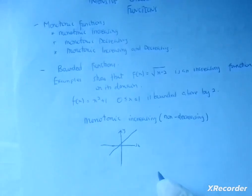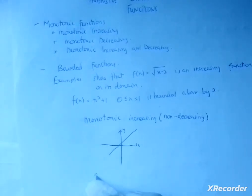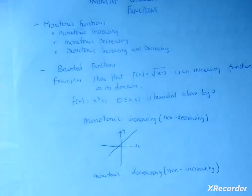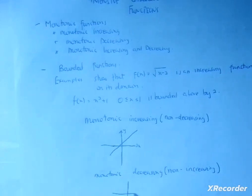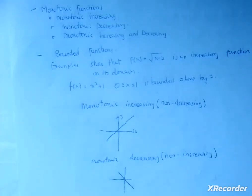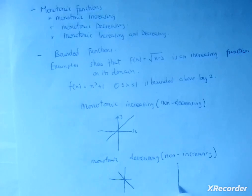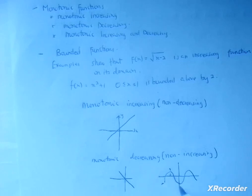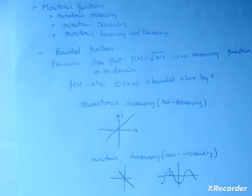Now let's talk about monotonic decreasing. A monotonic decreasing function is also called a non-increasing function — meaning it doesn't increase. You can sketch a function that is decreasing slowly. Note that when you take one section of a curve it may be increasing, and another section may be decreasing, so we call that a monotonic increasing and decreasing function.